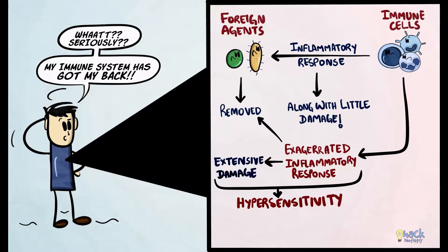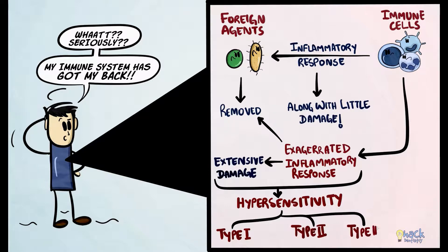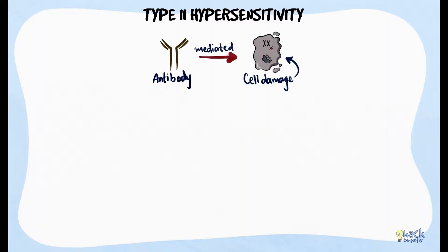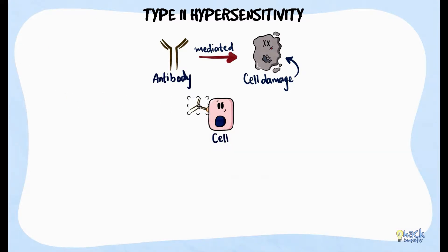There are 4 types of hypersensitivity reactions: types 1, 2, 3, and 4. Type 2 hypersensitivity is an antibody-mediated cytotoxic reaction where cell damage is the result of antibodies binding to antigens on cell surfaces.